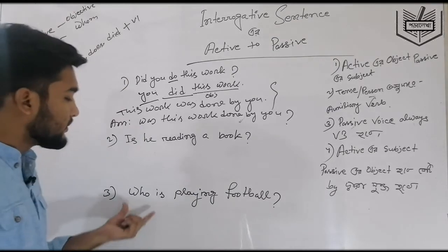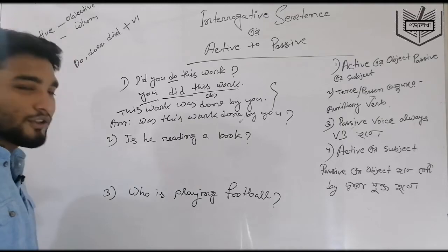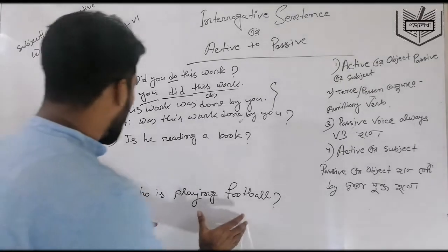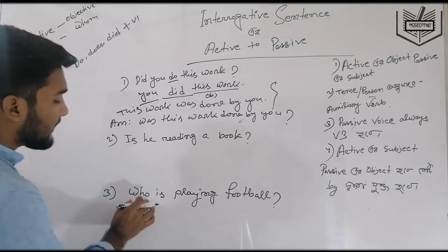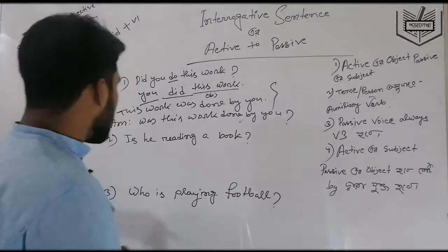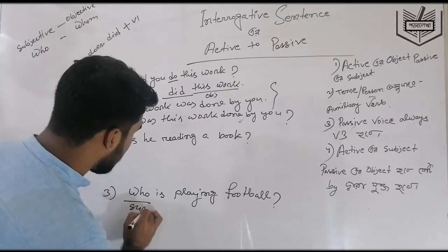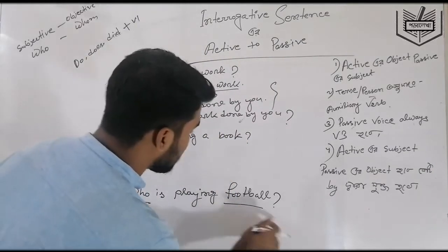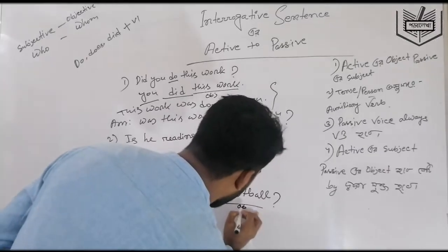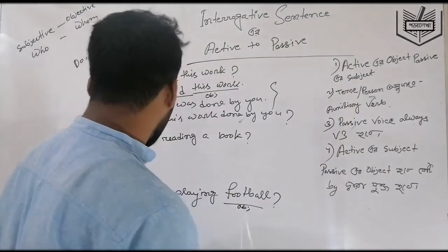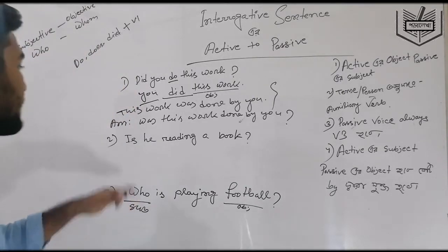Now for WH-questions — who, what, where, when — these are also interrogative sentences. But the subject in WH-questions with 'who' cannot be simply moved. Like personal pronouns: 'he' — objective form is 'him'; 'we' — objective form is 'us'. Similarly, 'who' — subjective form — the objective form is 'whom'. So in the passive, 'who' becomes 'whom', and the object becomes subject.